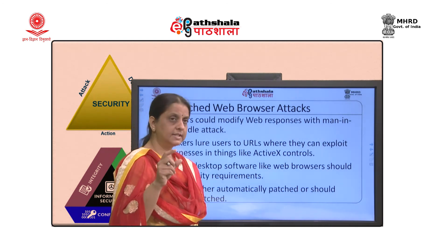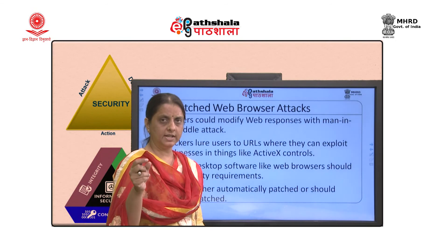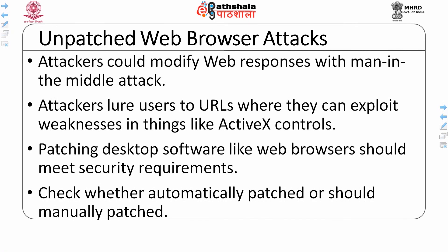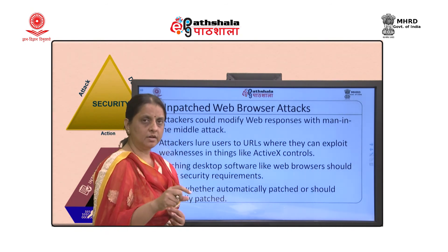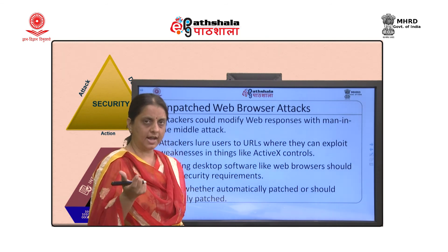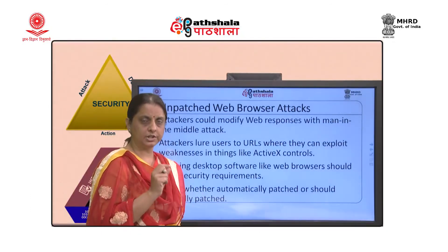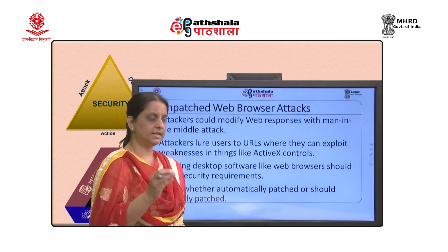The second client-level threat is unpatched web browser attacks. Attackers can sit in the middle when data is being transmitted over the internet or any network and take data from the middle. Attackers lure users to URLs where they can exploit weaknesses in things like ActiveX controls. Patching means adding certain modules to counter against attacks. There are two ways to recognize which patch is needed: automatically, your machine checks what patch is available and downloads it if it differs from what you have; or manually, you go to a particular website, find what patch is available, match it with what you have, and download it manually.